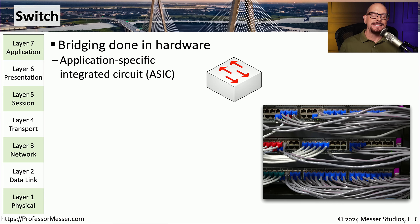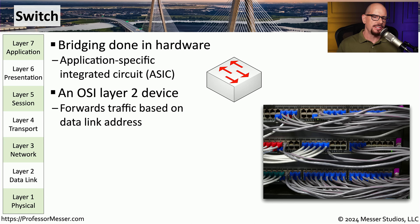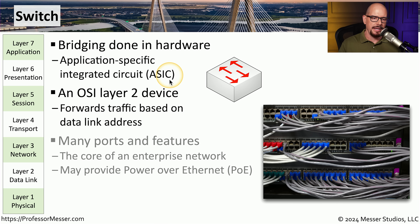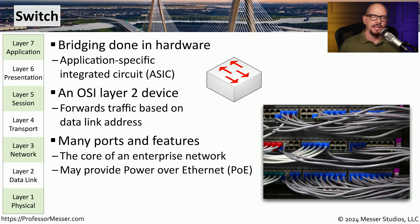Another common device is a network switch. Switches operate at the MAC address layer to be able to forward traffic, so we often refer to that as an OSI layer 2 or data link device. These operate mostly in hardware. The hardware inside of these devices is referred to as an ASIC — an application-specific integrated circuit. There are many different functions and capabilities inside of these switches, especially if you're using one designed for the enterprise.